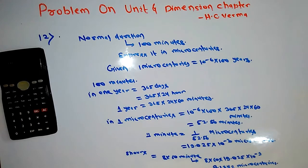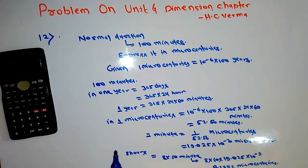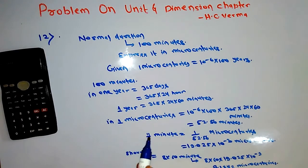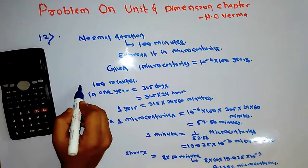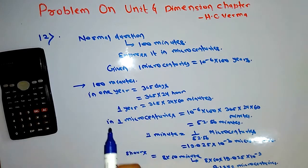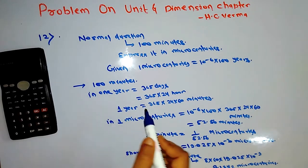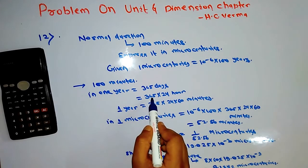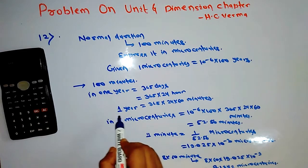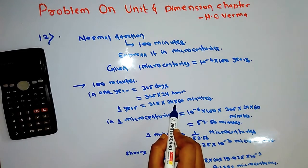So to summarize question 12: the normal duration of physics practical in Indian college is 100 minutes; we expressed it in micro centuries. In 1 year there are 365 days, so we converted 365 into 24 into 60 minutes, and then converted 100 minutes into micro centuries using that relationship.